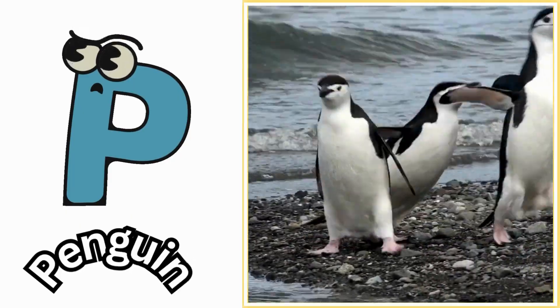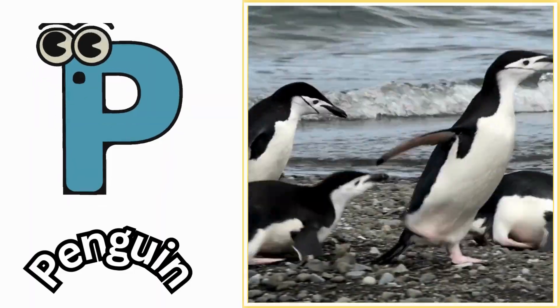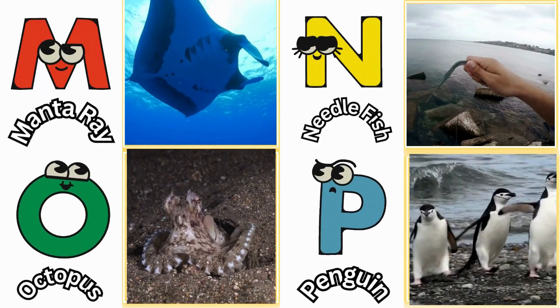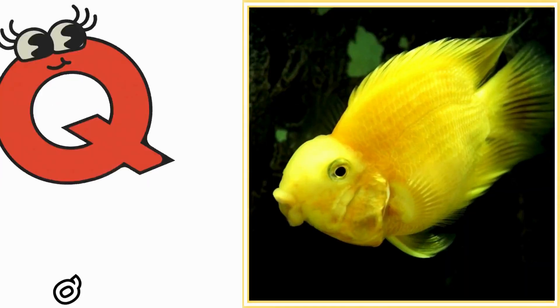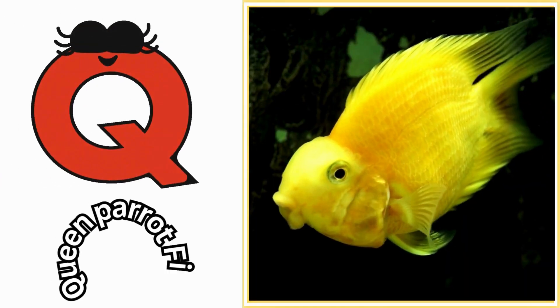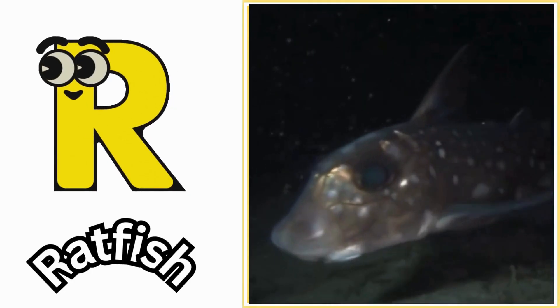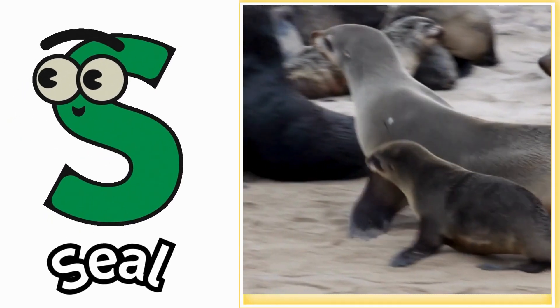P is for penguin. Fuh, fuh, penguin. Q is for queen parrotfish. Quh, queen parrotfish. R is for ratfish. Hr, rr, ratfish.